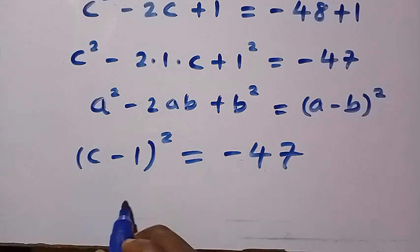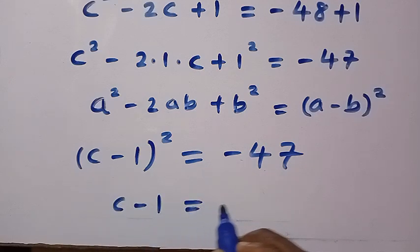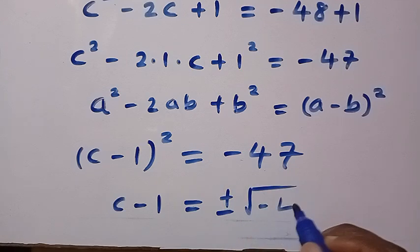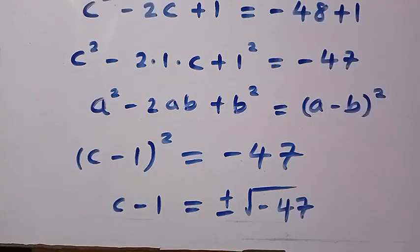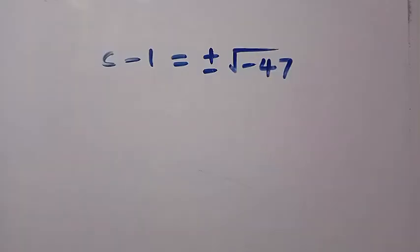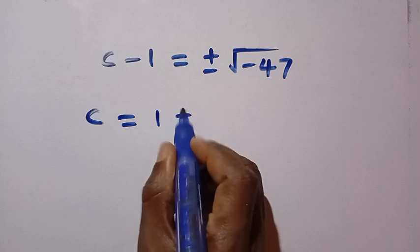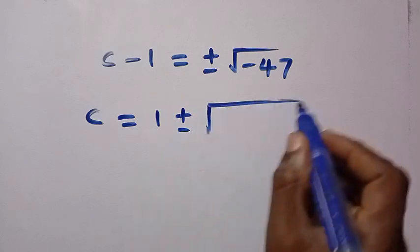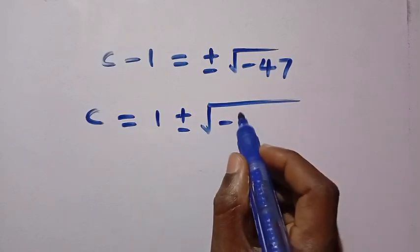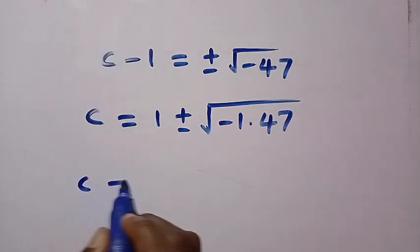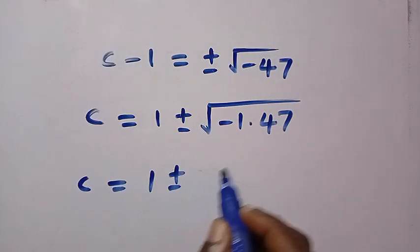By taking the square root of both sides, we have C minus 1 equals plus or minus the square root of minus 47. Let's take 1 to the other side. We have C equals 1 plus or minus the square root of minus 1 times 47.